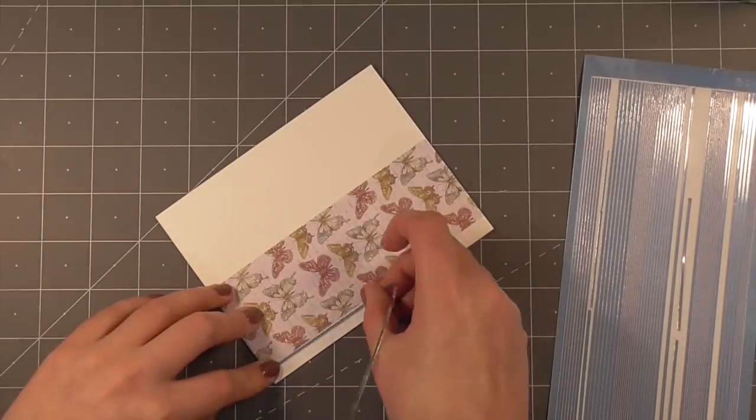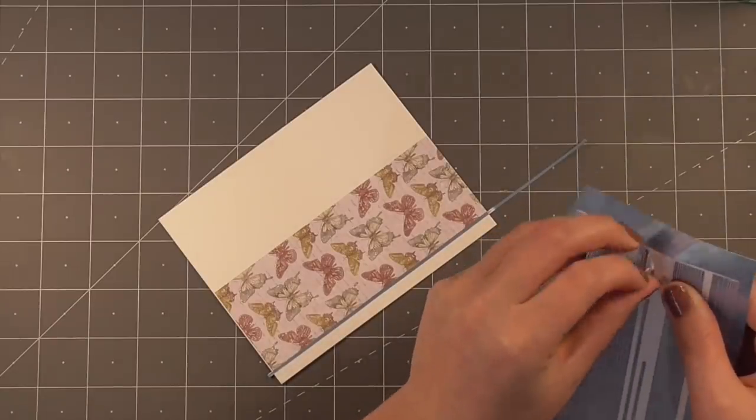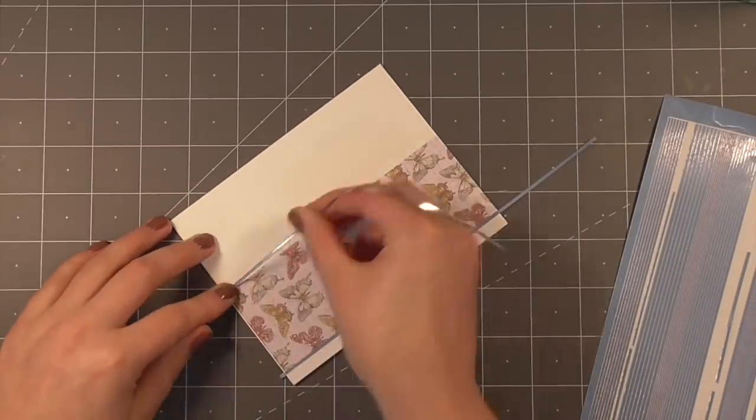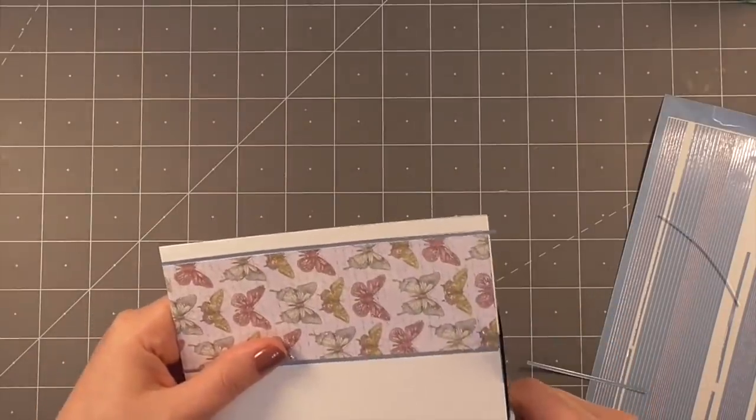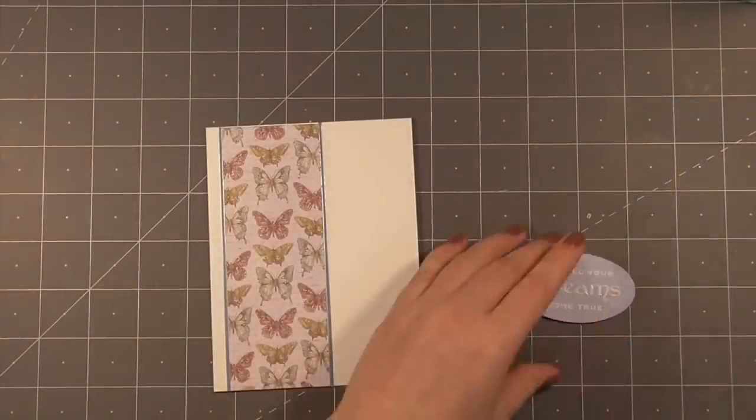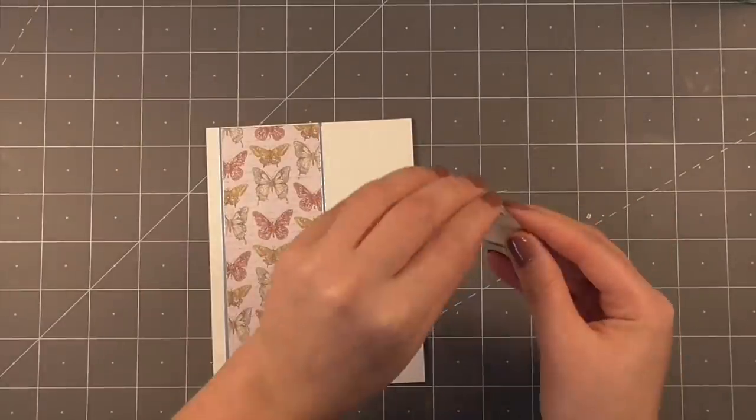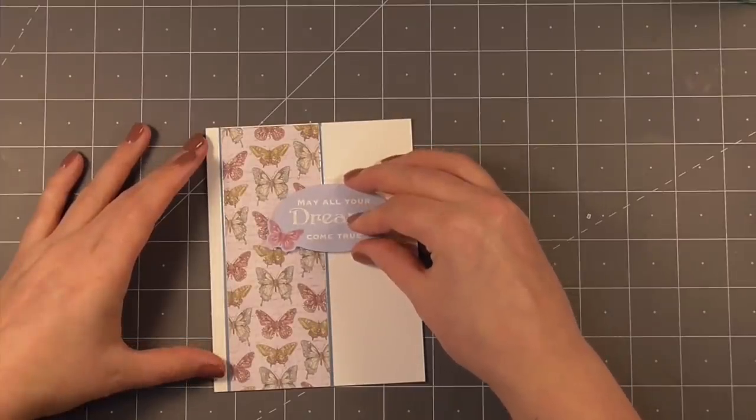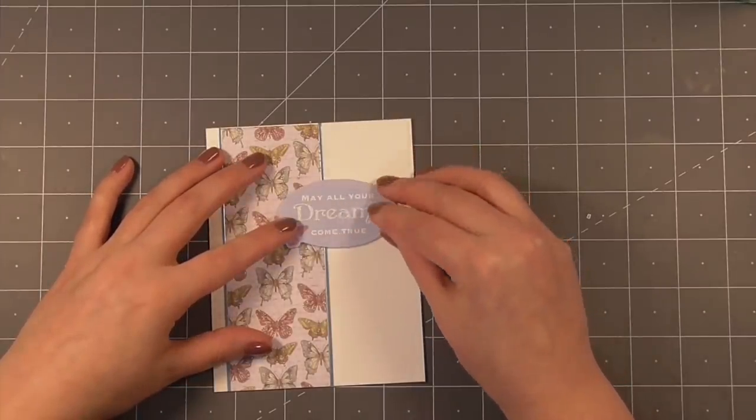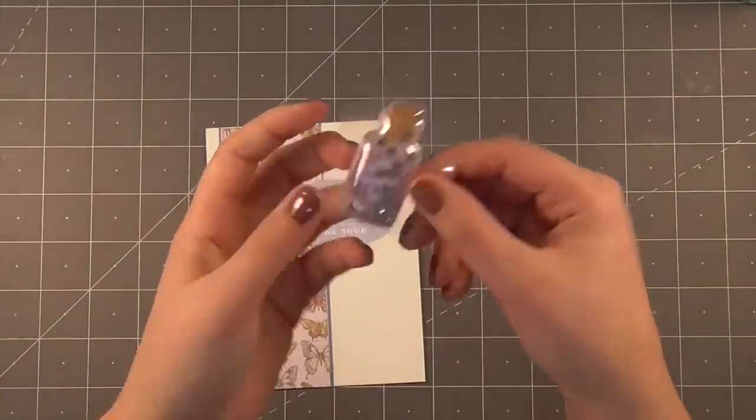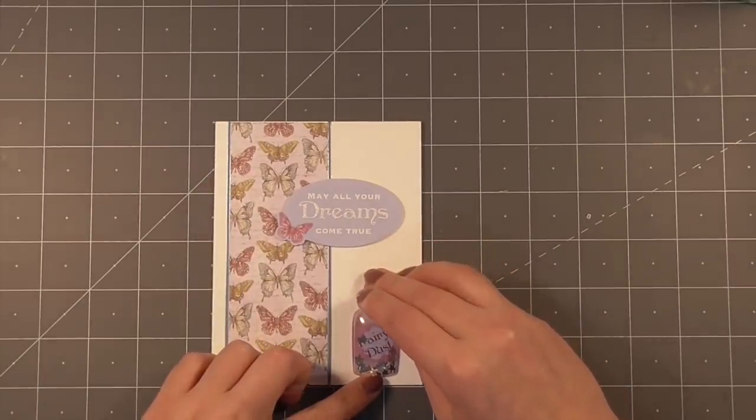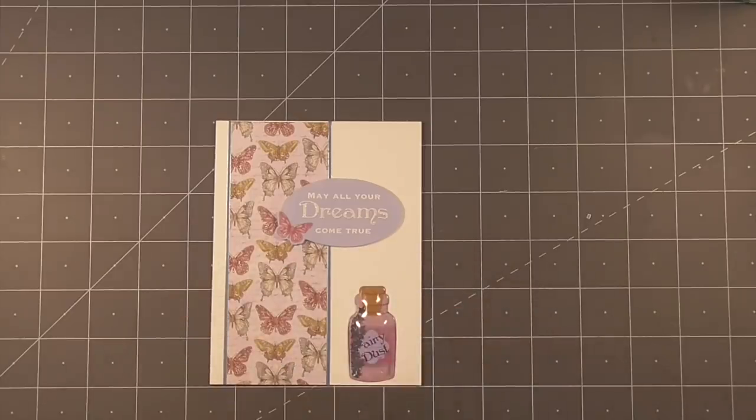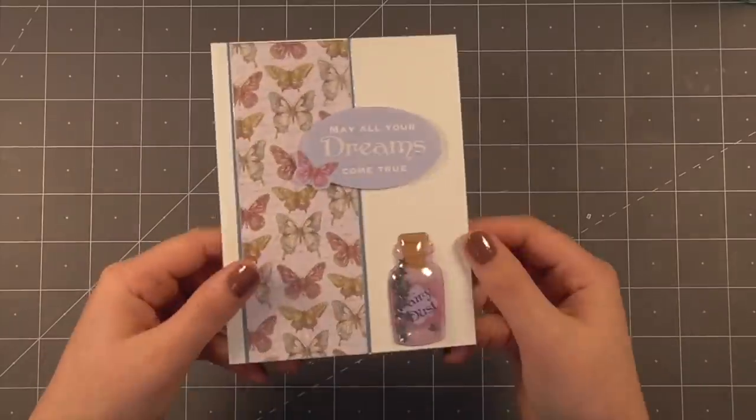You can find pre-made shaker stickers and it takes all of the work out of a shaker card because all you need to do is peel and stick. I'll go ahead and finish up decorating this card using some more peel offs for that faux matting effect. This one is in the shape of a little fairy dust bottle and I'll go ahead and stick that down. That is the easiest shaker card you will ever make. Don't worry if you're after something a little bit more complicated, we've got some really fun ones coming up including a liquid shaker card.